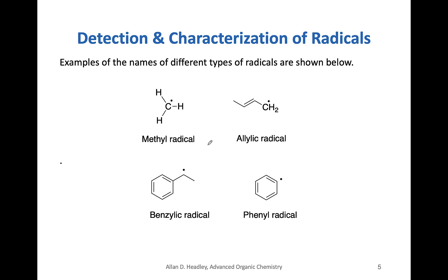Here are some types of radicals. The methyl radical is a carbon bonded to three hydrogens. The allylic radical has the radical carbon adjacent to a carbon-carbon double bond — that adjacent carbon is the allylic carbon. The benzylic radical has the radical on the carbon bonded to the benzene ring. Note the difference: a phenyl radical has the odd electron directly on the ring carbon itself.